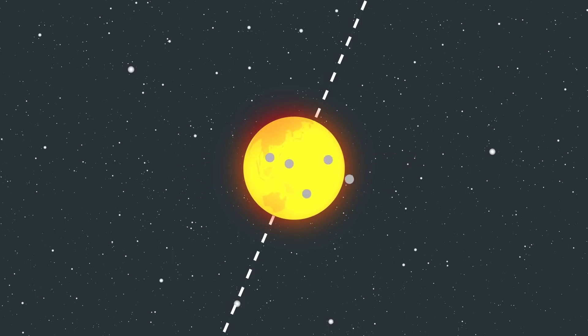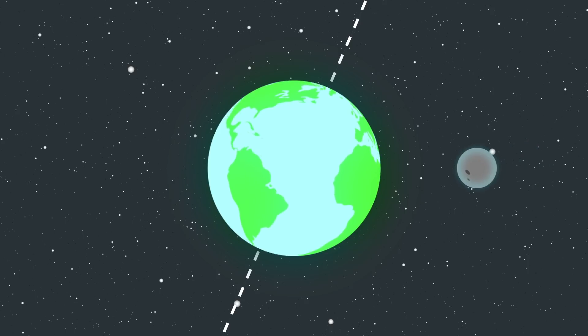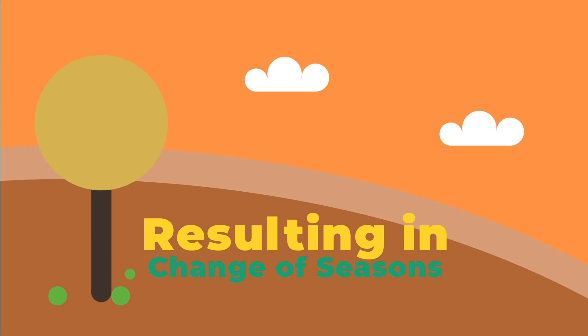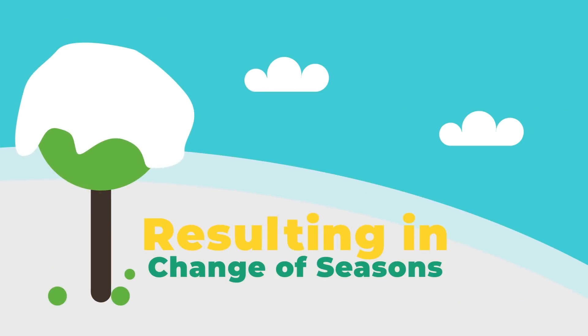And then one day they all combined together to form the moon that we know today. This impact also caused the 23.5 degree tilt in the earth's axis. You see that dotted line? Well that represents the tilt. And we gotta thank that tilt in the earth's axis for the different kind of seasons that we get.